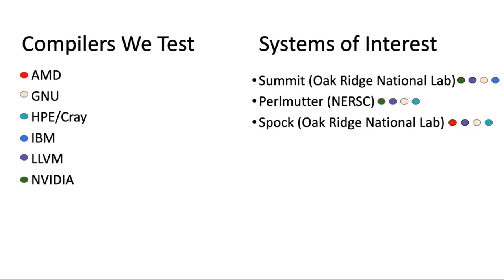We test a wide array of compilers: AMD Clang, AMD Clang++, ROCm compilers, the full fleet of GCC, G++, GFortran, the CCE compilers, IBM on Summit, LLVM in development and upstream versions, as well as the NVIDIA HPC compiler. The systems we test them on include Summit at Oak Ridge National Lab, Perlmutter at NERSC, and Spock at Oak Ridge. We test LLVM and GCC across all these systems, NVIDIA on systems with NVIDIA hardware, AMD on systems with AMD accelerators, and IBM and Cray on their respective CPU architectures.